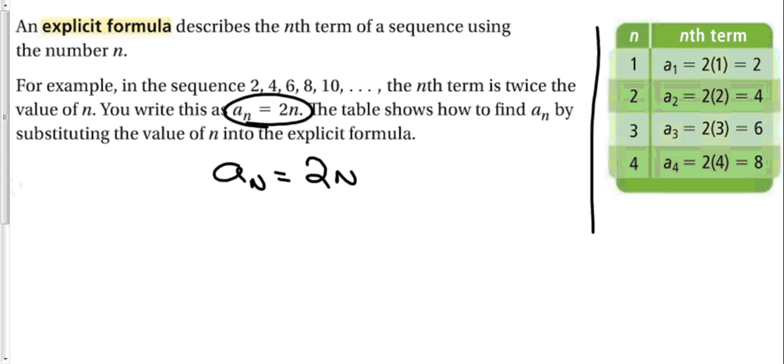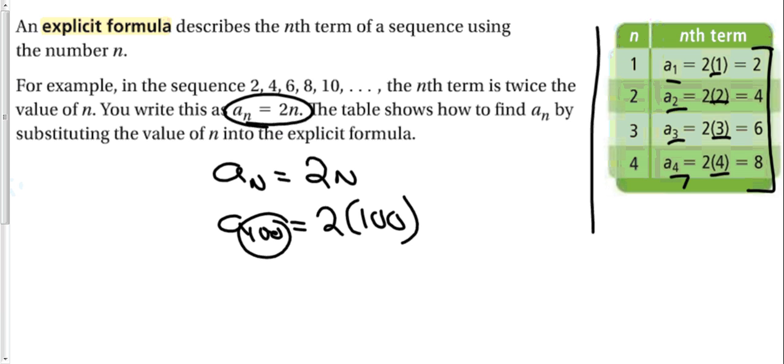For this example with the table on the right, our explicit formula is a sub n equals 2n. That means any term that we want, we can find using this formula. On the table, we find the 1st, 2nd, 3rd, and 4th term by plugging in 1, 2, 3, and 4 into the formula. Say I want to find the 100th term. A sub 100, all I would have to do is plug 100 into n. The 100th term of the sequence is 200.